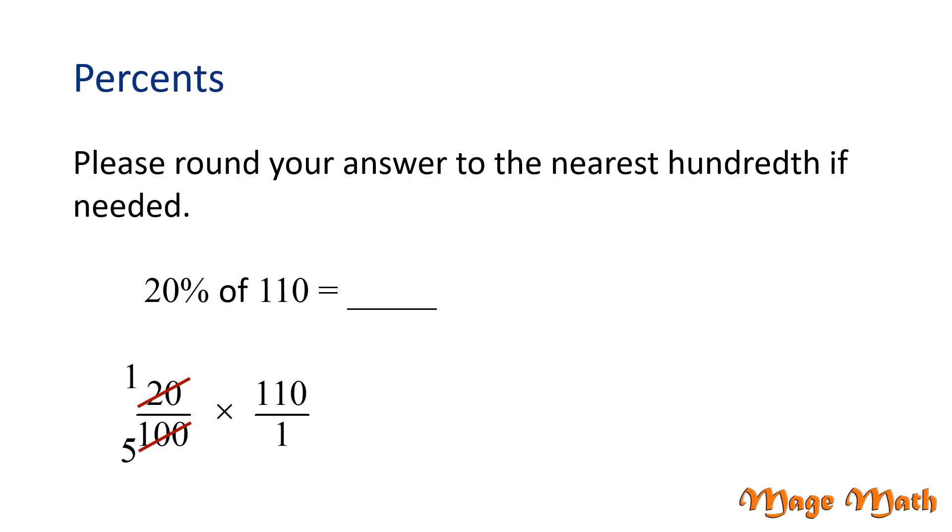Multiplying straight across gives us 110 divided by 5. Now let's perform the division. 5 goes into 110 22 times, so we've found 20% of 110 is 22. Because we have a whole number, we don't need to round as the directions asked. Nice work!